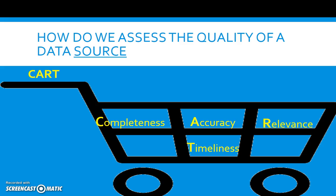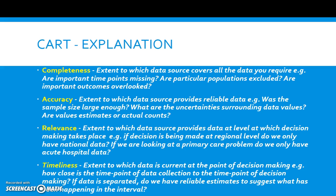How do we assess the quality of a data source when we've found it? We look at completeness, accuracy, relevance and timeliness. Completeness: the extent to which it covers all the data we require. Accuracy: the extent to which it provides reliable data. Relevance: the extent to which the data is provided at the level we need it. And timeliness: the extent to which it is current — the interval between data collection and our using the data.